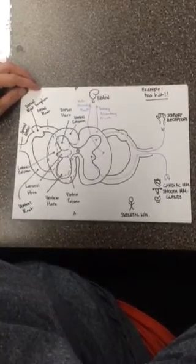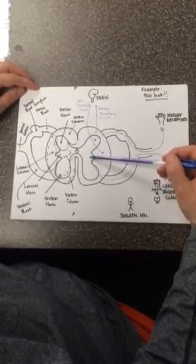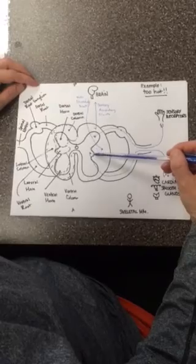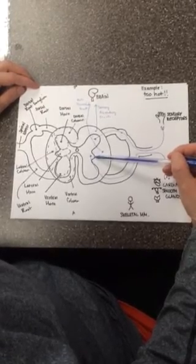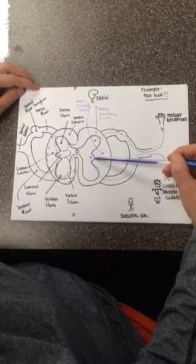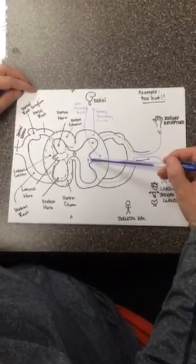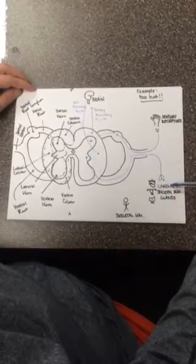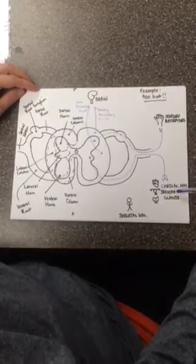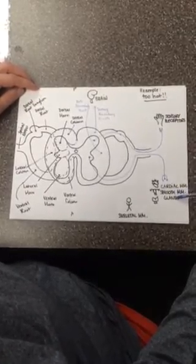Now I mentioned earlier that we have to go to the lateral horn with this motor descending information. The lateral horn in the cross section of the spinal cord only exists in the thoracic spine and the upper lumbar spine. The reason for that is because those are the nerves that control things like the cardiac muscle, smooth muscle, a good example of smooth muscle is what's found in the stomach, and our glands.